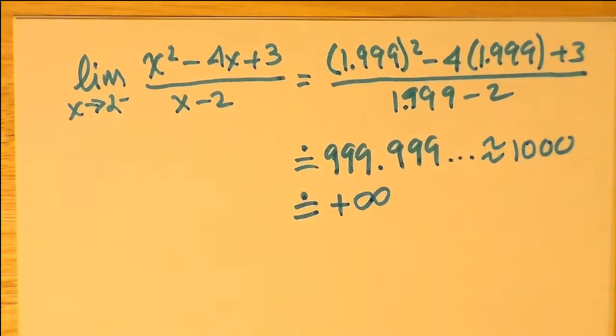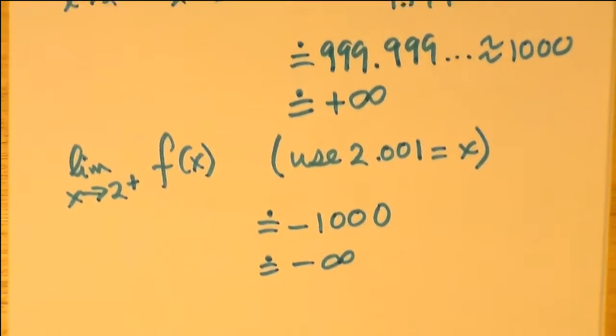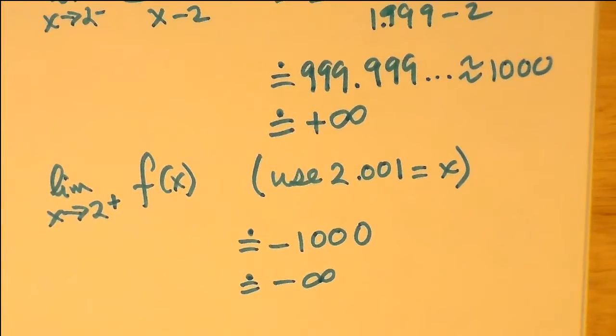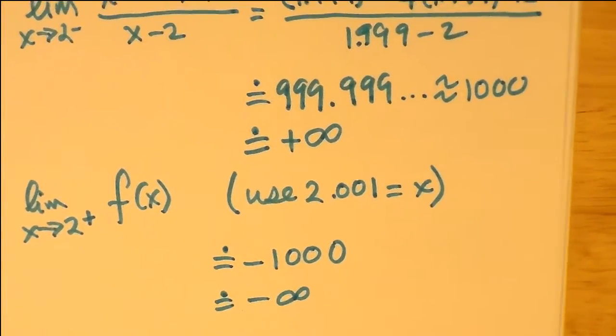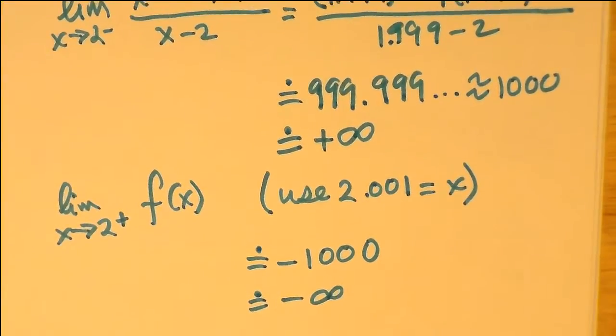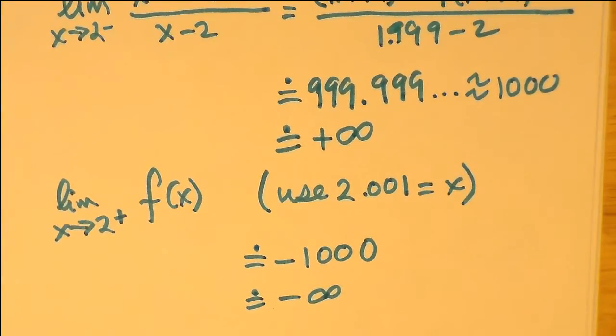And we also find that we approach 2 from the right, maybe using 2.001, that we're approaching negative infinity. It's actually going to negative a thousand. So it's going toward negative infinity.